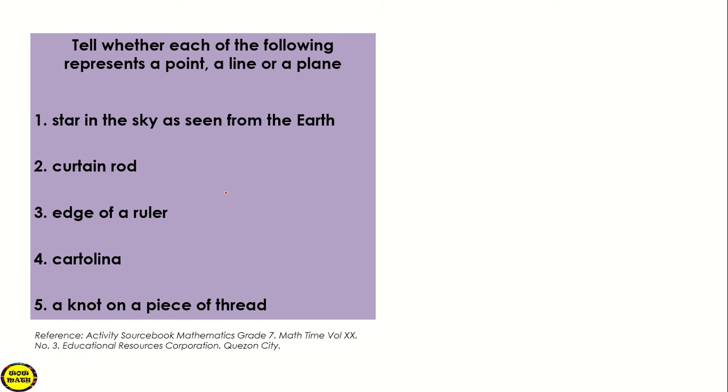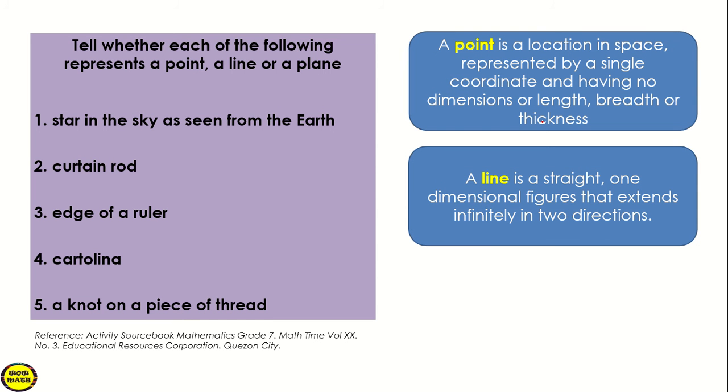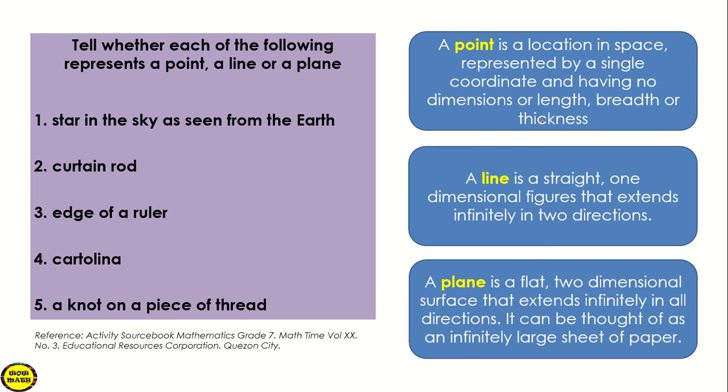When we say a point, it is a location in space represented by a single coordinate and having no dimensions or length, breadth or thickness. A line is a straight one-dimensional figure that extends infinitely in two directions. And a plane is a flat two-dimensional surface that extends infinitely in all directions.